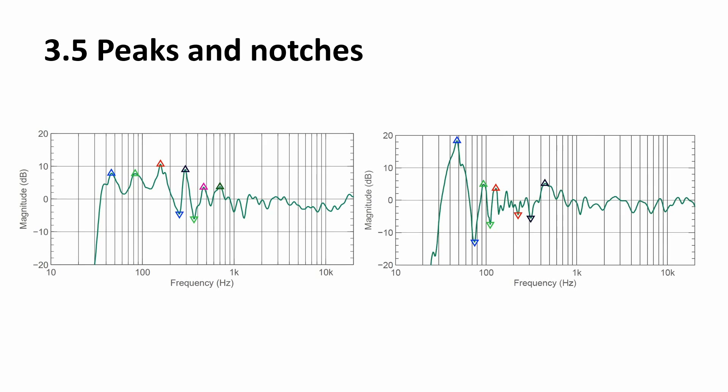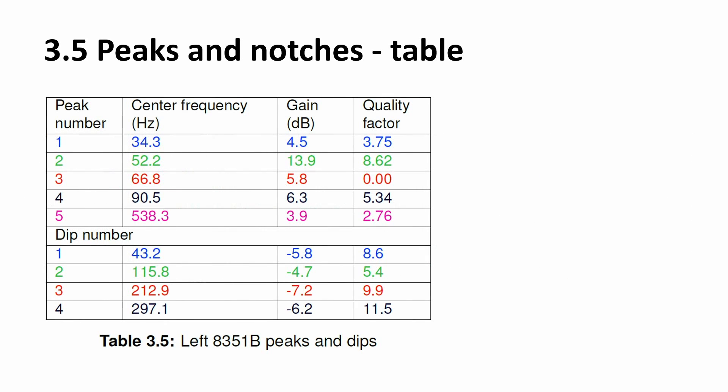After looking at your frequency responses, it can be helpful to see which are the important parts. This is why we mark peaks and notches. Notches are of particular interest because boosts can usually be compensated using EQ — which is what GLM does — but notches caused by cancellations cannot be compensated using EQ. These can only be addressed by better placement or acoustical treatment. In addition, we show these peaks and notches in a table listing frequency, gain, and Q factor. A deep but high-Q narrow notch is less critical compared to a wider one.